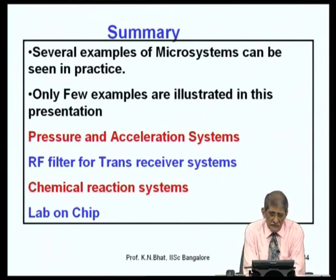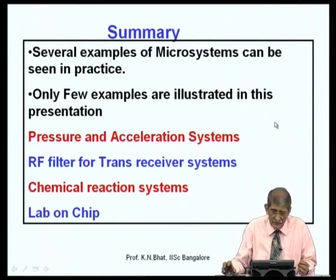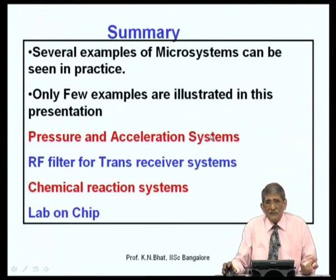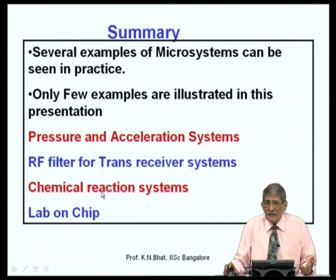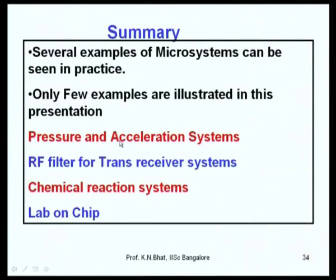I have illustrated the pressure sensor with electronics, the acceleration system with electronics for airbag actuation, the RF filter resonator for transceiver systems, the chemical reaction system with pump, channel, and mixer, and the lab on chip — the classical example of a micro system for testing blood of a patient even in a remote location or war front. Thank you very much. We will continue on some of these things in subsequent lectures.